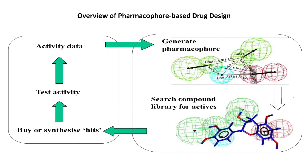The overview of how a pharmacophore-based model is generated can be seen in the figure. First, you have a set of molecules from which a pharmacophore model is generated. Then we use this pharmacophore model to screen a database of compounds to identify hit compounds. The identified hit compounds are then biologically evaluated to identify lead compounds. If any hit compound is biologically active, you can include it in the initial set of compounds and generate a new pharmacophore model. This cycle can be repeated until we get a compound with good biological activity against our target.